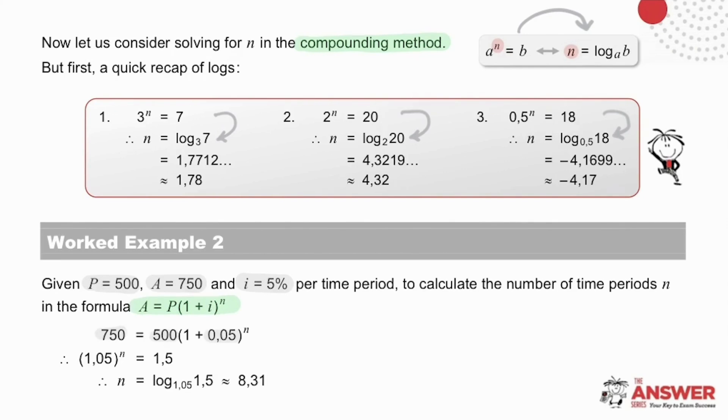Substituting into the various parameters, our equation simplifies to bracket 1.05 to the n equals 1.5. It is necessary here to apply the log definition in order to solve for n. Remember we have the base to the power equals the number. Therefore, we have the power, in this case n, equaling log base 1.05 of the number 1.5. And this gives us an answer of approximately 8.31 for n.